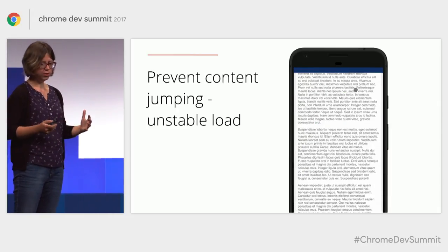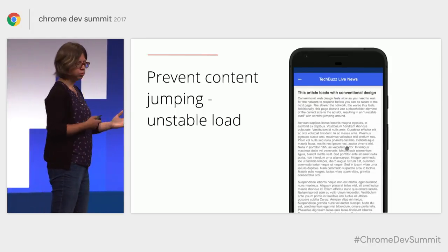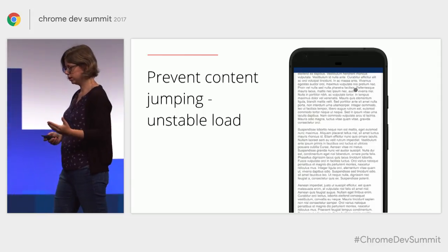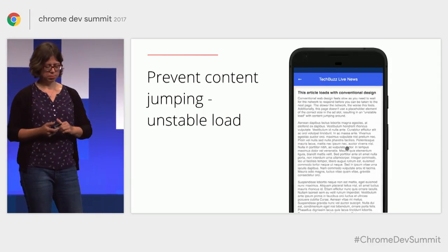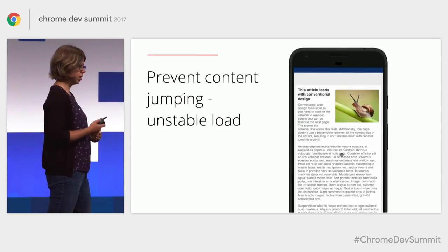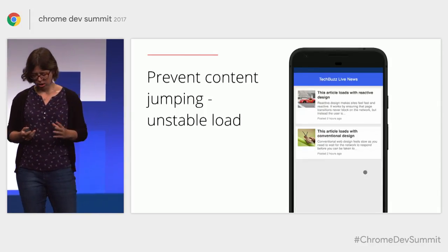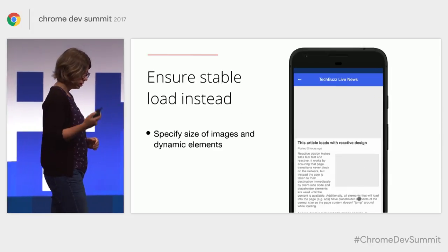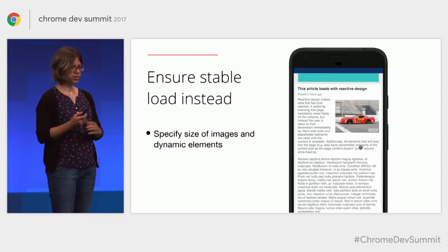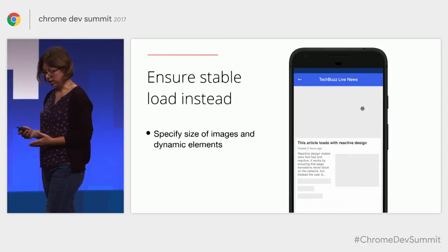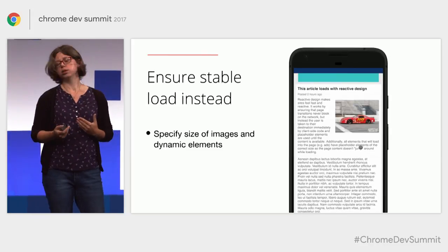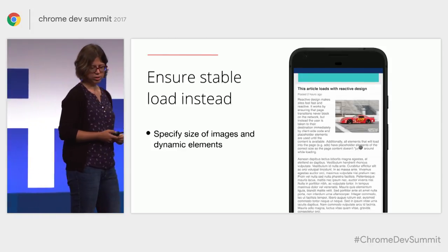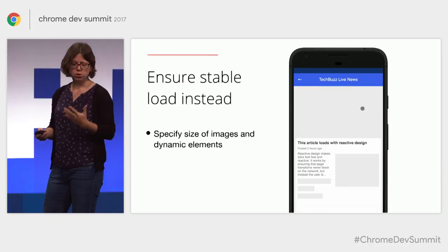Another pattern that enhances this feeling of being in control is the stable load. What do I mean by unstable load? Well, you probably often see this on the web today, where you load an article on your mobile device and you're reading it, and it just jumps from under your eyes because some additional content like an image loaded at the top of it. It's especially annoying if it's a link and you try to tap it and it always runs away — so it's really an anti-pattern. Instead, you can ensure a stable load. It's as easy as specifying the size of your images beforehand and of all the dynamic elements. This way you tell the browser how to lay out the elements ahead of time, so the content is already in its original position when the new content arrives, and you never miss a link.